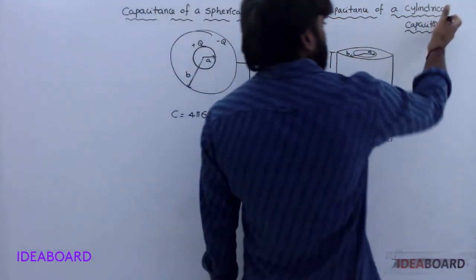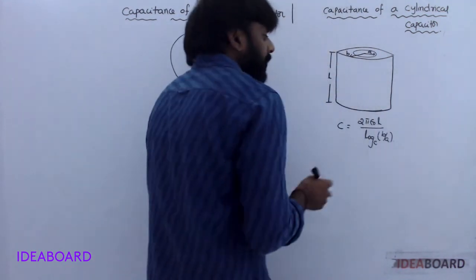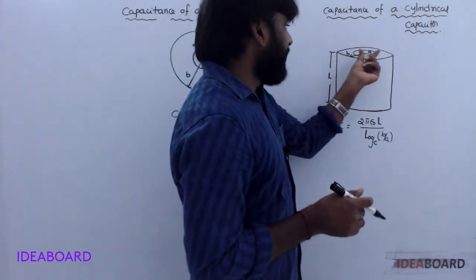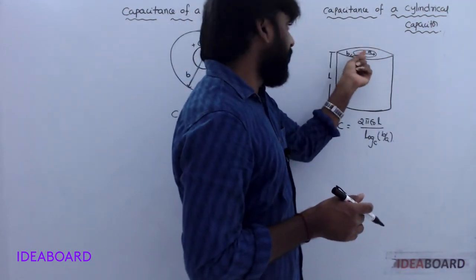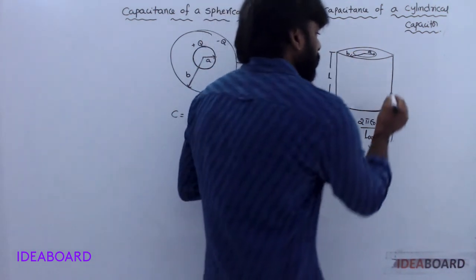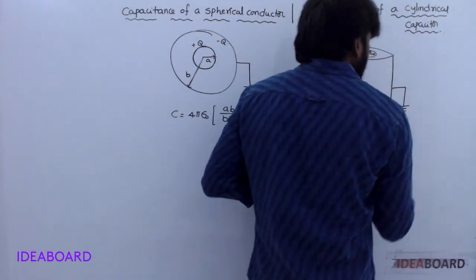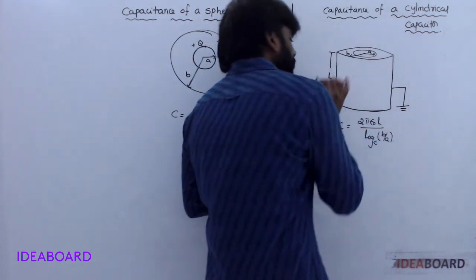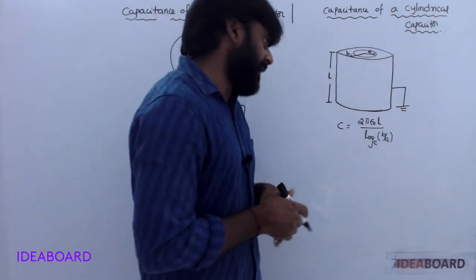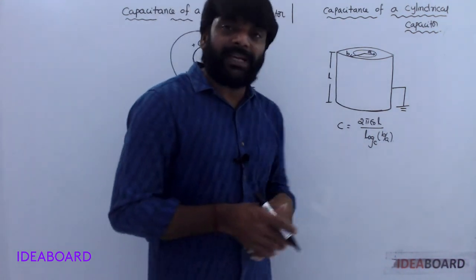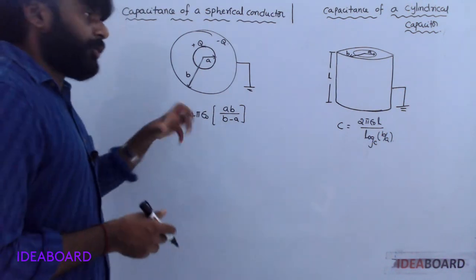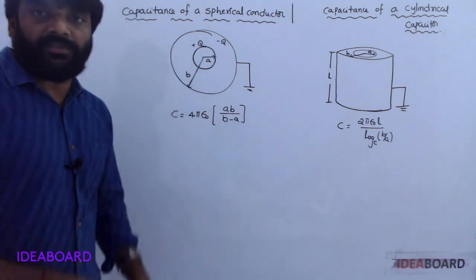Capacitance of a cylindrical capacitor: the inner cylinder has radius A and the outer one has radius B, with the outer cylinder connected to the ground and length L. Its capacitance is C = 2πε₀L / log(B/A). No derivation is required for this formula.